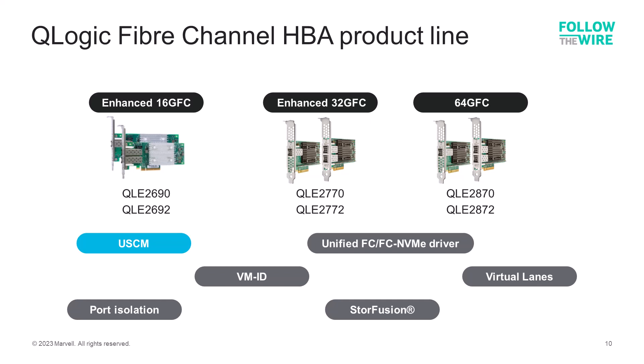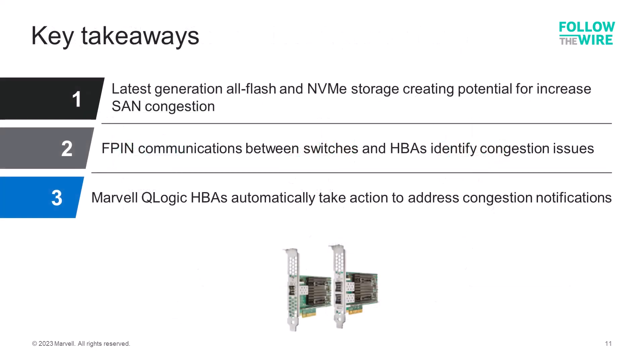These HBAs work in conjunction with both Brocade and Cisco Fiber Channel fabrics to automatically address SAN congestion issues. They are one of the key elements in creating a self-driving SAN for your customers. The key takeaways from this video: the probability for SAN congestion will continue to increase as new types of storage systems are deployed; F-PIN communications between HBAs and switch fabrics are key to identifying congestion issues automatically; and Q-Logic HBAs from Marvell are designed to take corrective action when F-PINs are received, helping to create the self-driving SAN environment.